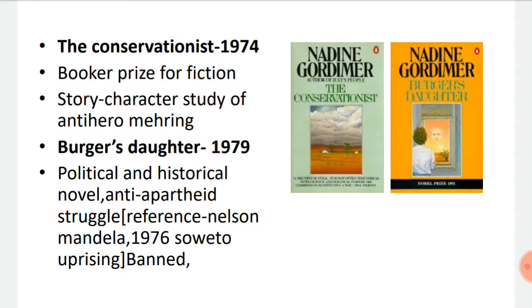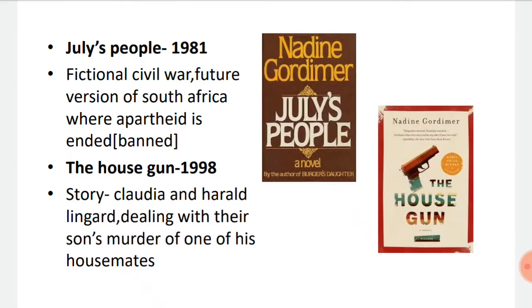Next we have 'Burger's Daughter,' published in the year 1979. It is a political and historical novel based on the anti-apartheid struggle. It features references to the activist Nelson Mandela and the Soweto uprising of 1976. This novel was banned.